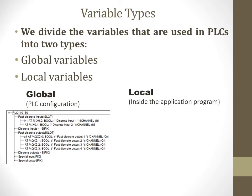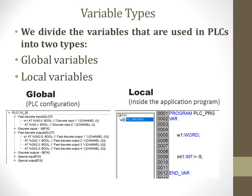The second group of variables we call local variables. These are inside the application program. As we see, these variables are created in the program and the number of these variables is infinite. If we speak about global variables, the count is not infinite because the number of these variables is connected with the real number of controller channels.